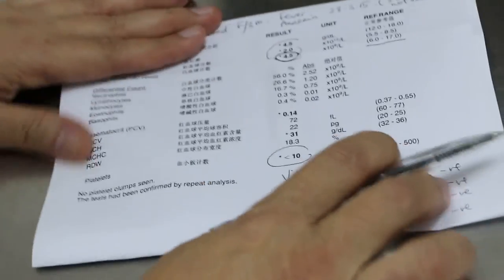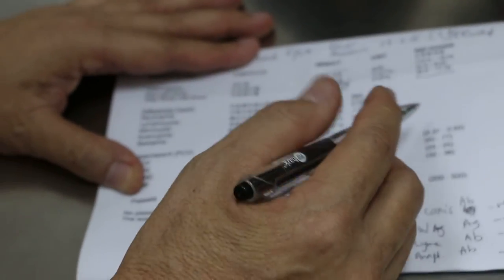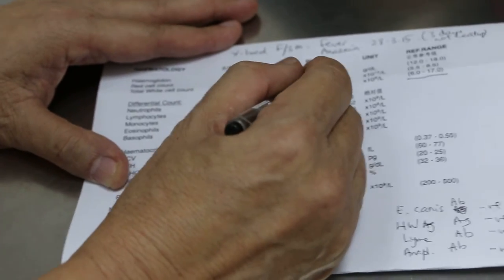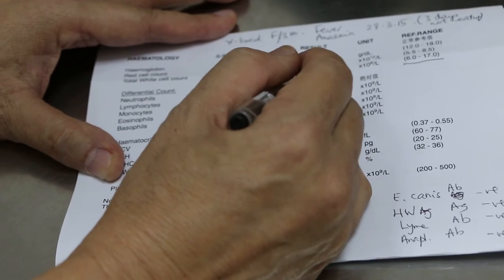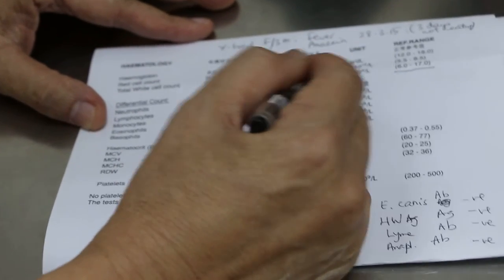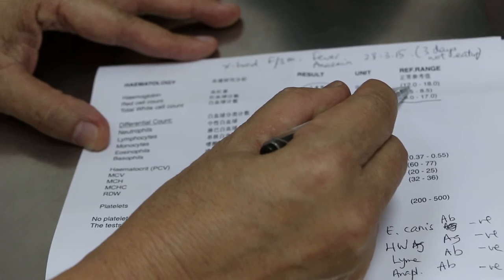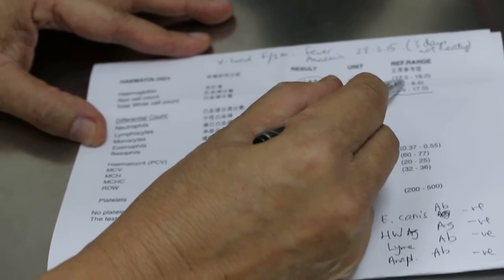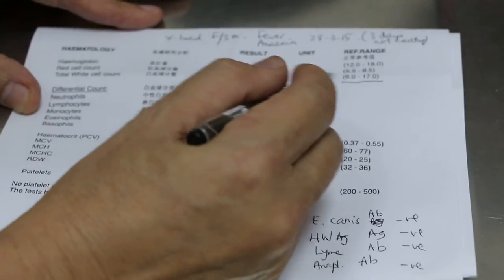So now we come back to this blood test again. The anemia is due to the drop in red blood cells and hemoglobin. As you can see 4.5 based on 12 hemoglobin and the red cell count 2, it should be 5.